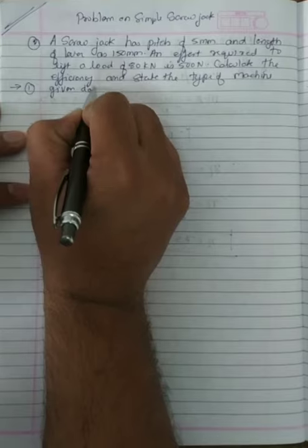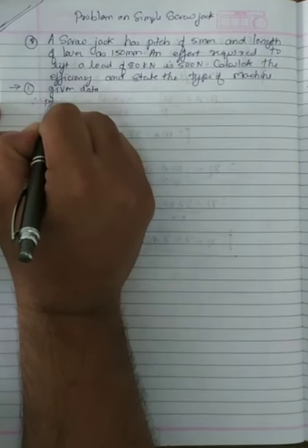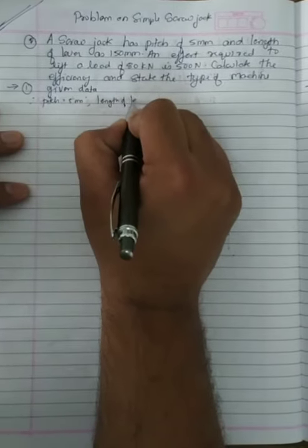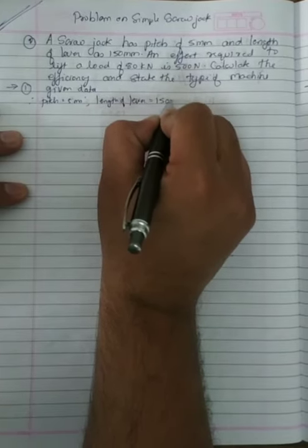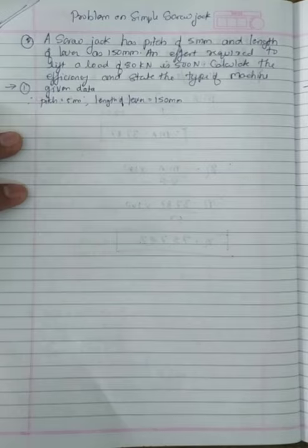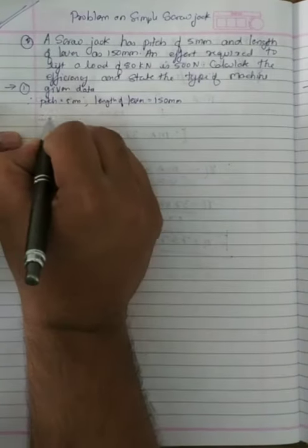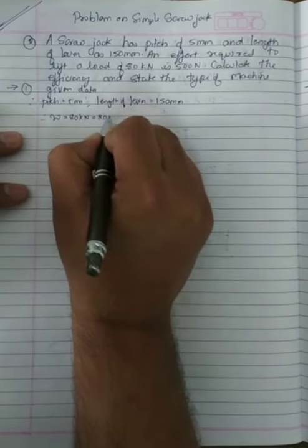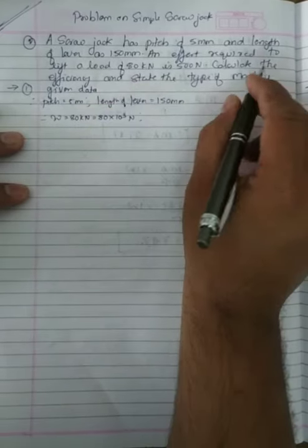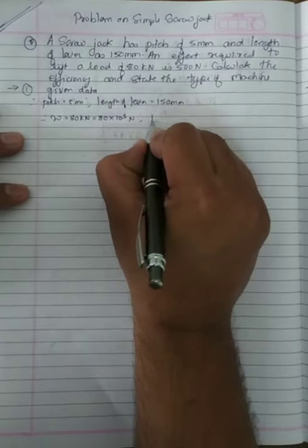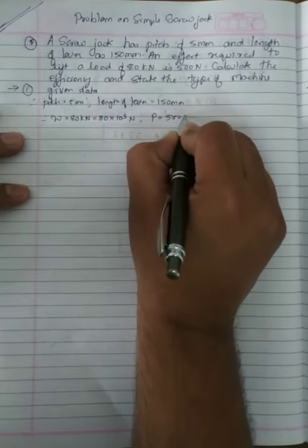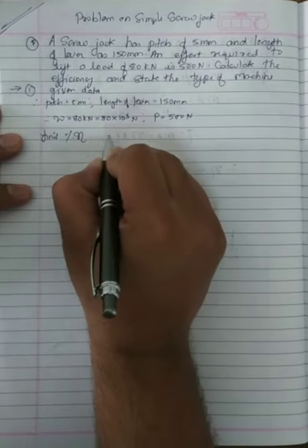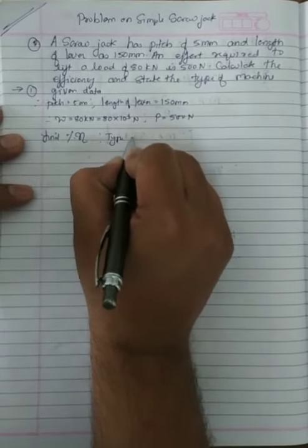Given data: pitch is 5 mm, length of lever is 150 mm. Load is 80 kilonewton, which we convert to newton: 80 into 10 raised to 3 newton. Effort required to lift the load is 500 newton. We need to find out efficiency and type of machine.